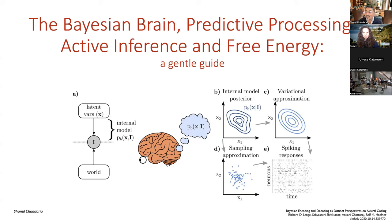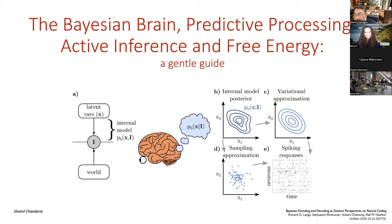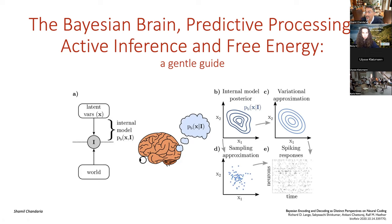I wonder if by a show of hands, anyone could put up their hand if they feel like they have a grip on the free energy principle and active inference? How about something easier - is anyone familiar with the basic Bayesian brain hypothesis? Okay, a few. So we'll go at it slowly. I assume most people have a mathematical background, so that's going to make it a little easier.